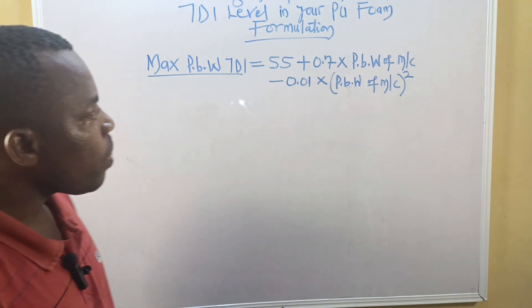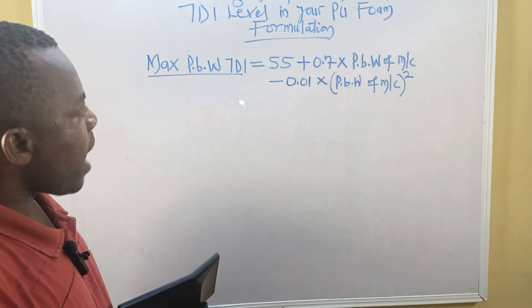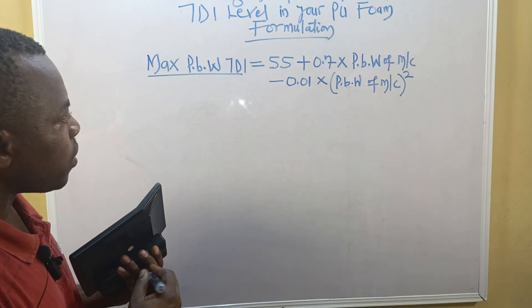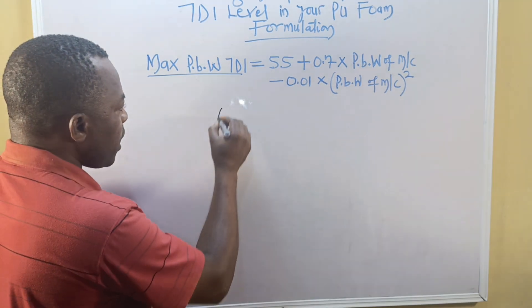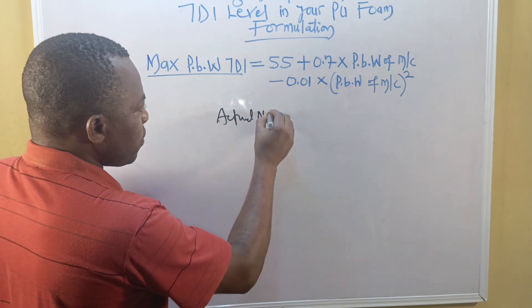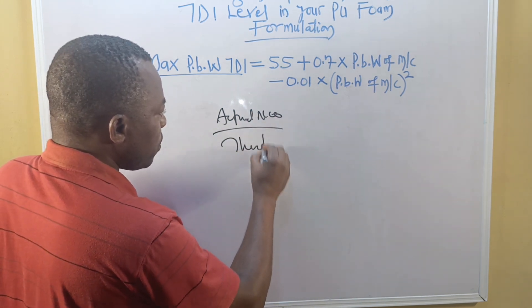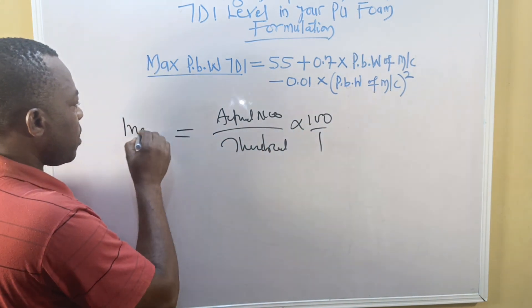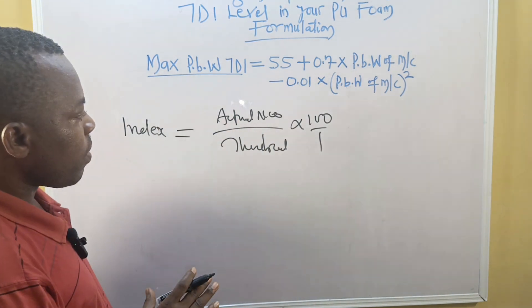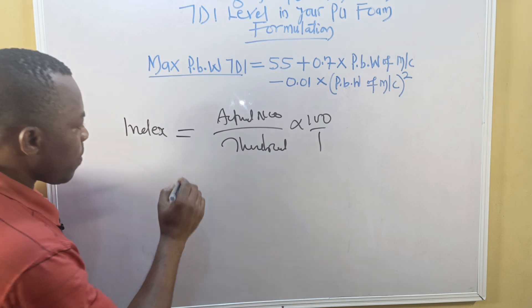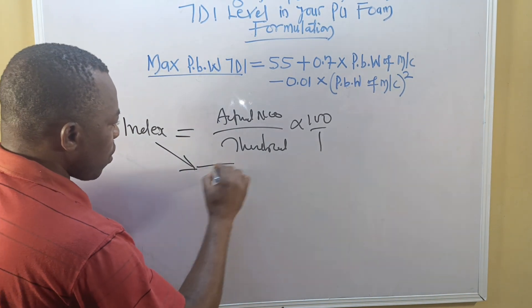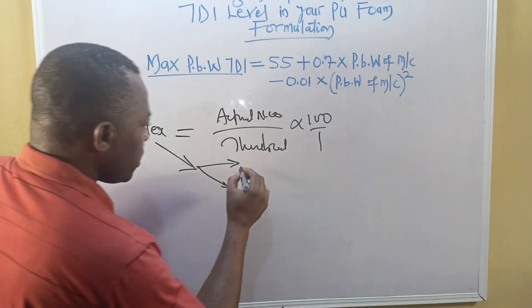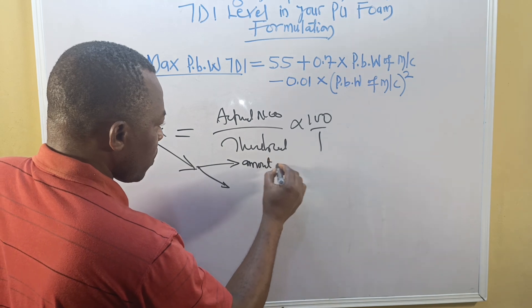What we do is choose an average and use it to design our PU foam formulation. In my previous lesson I said that TDI index is the actual NCO over the theoretical NCO times 100 over 1.